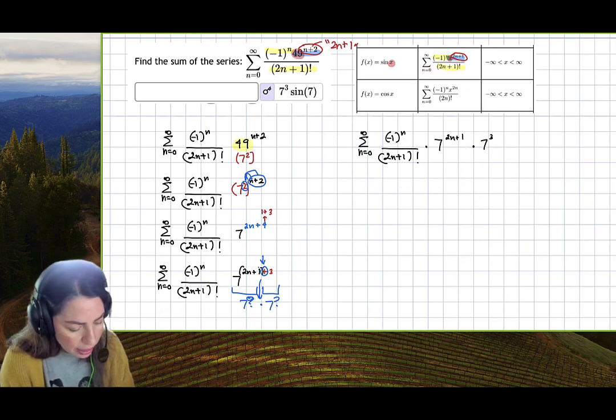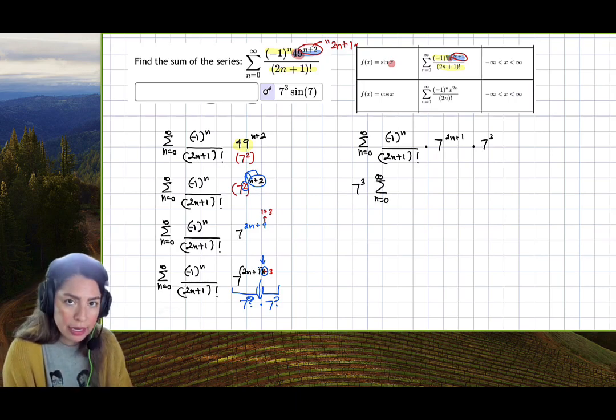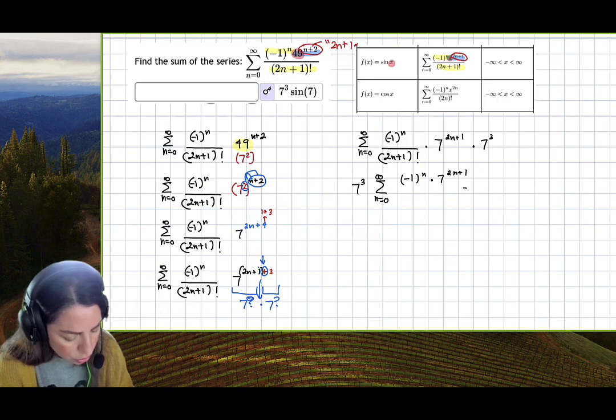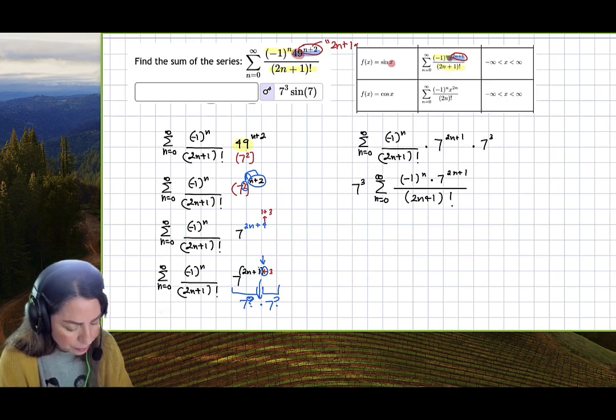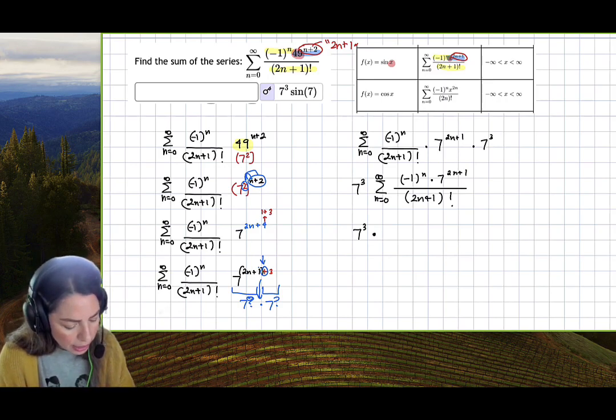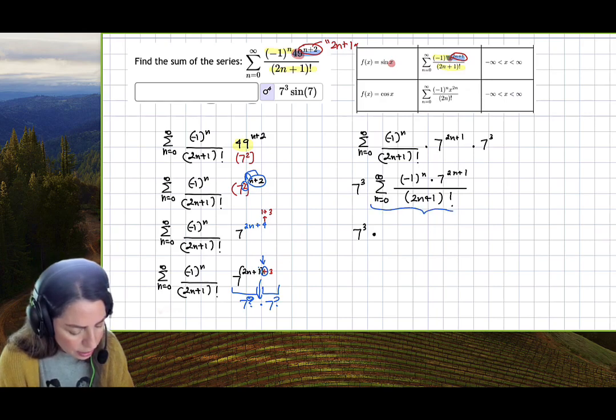Now I have 7 cubed times the summation from n equals 0 to infinity. I'm going to write it similar to the box: negative 1 to the n times 7 to the 2n plus 1 all over 2n plus 1 factorial. I can copy and paste the 7 cubed times; that stays as a constant multiple.